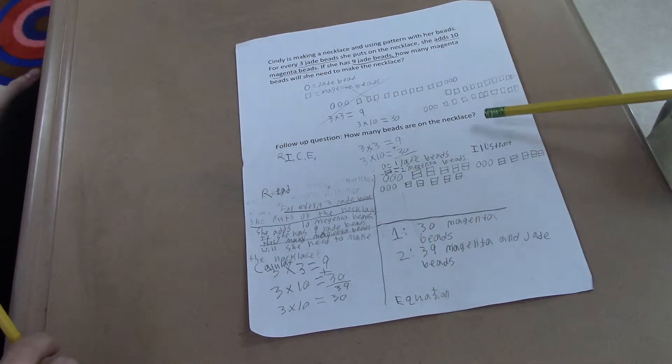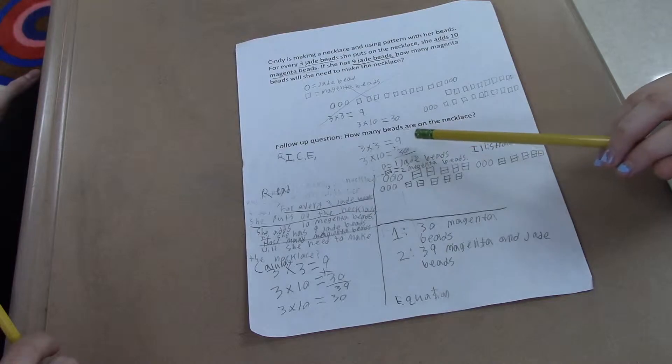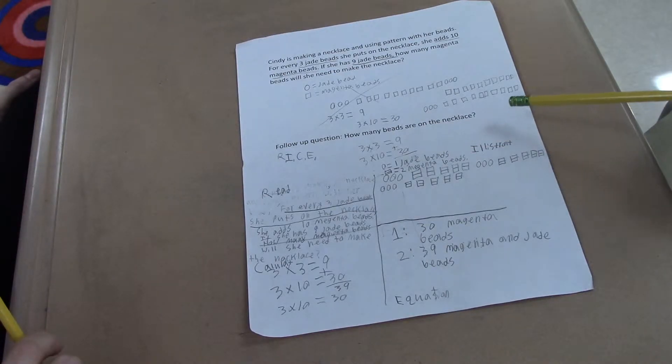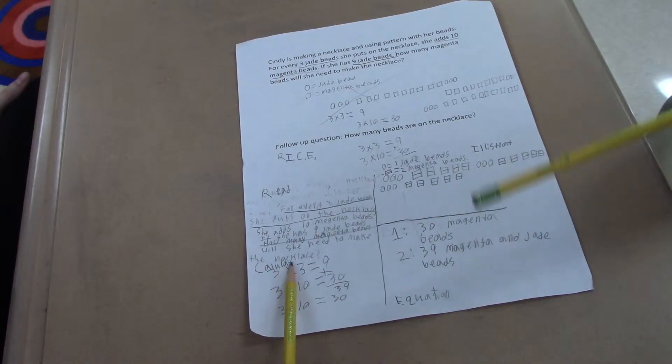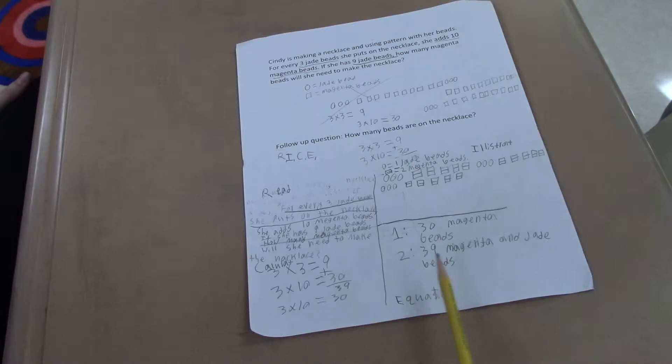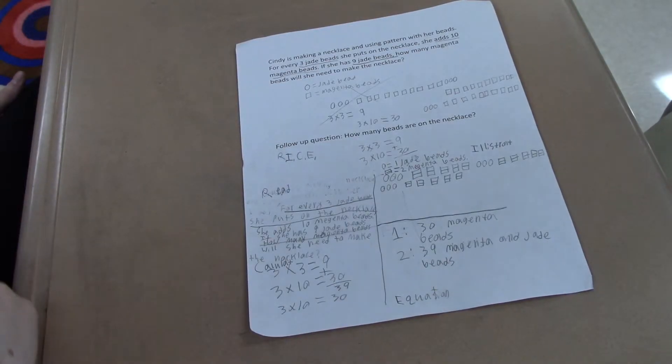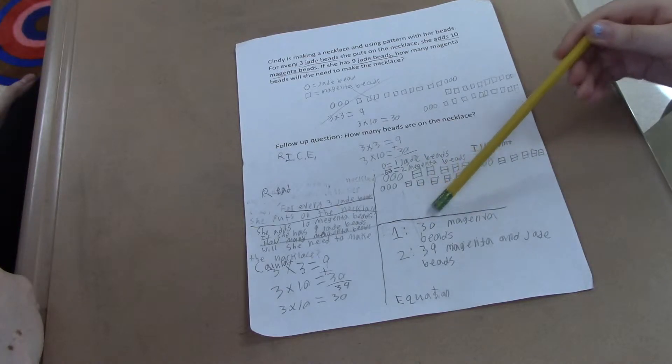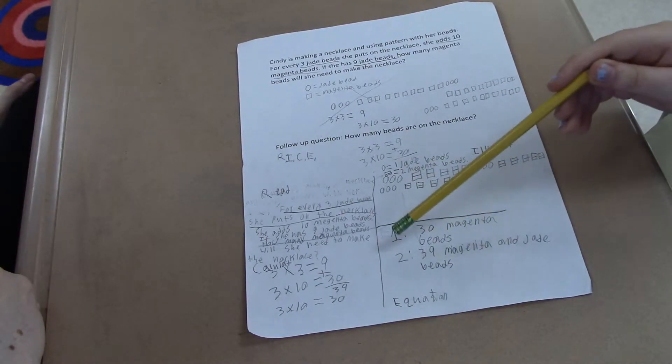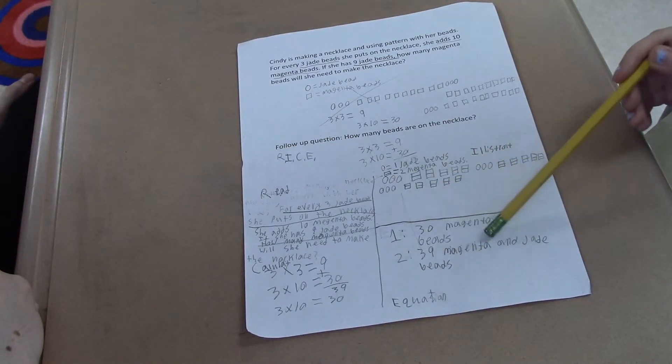And then for the other question, how many beads are on the necklace? So you showed your calculation here and then it looks like this part of RICE is the equation. Can you explain how you built up that equation? So for the first one it was thirty magenta beads. And then for the second one it was thirty-nine magenta beads.